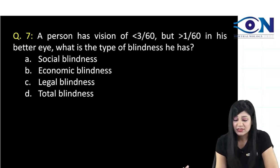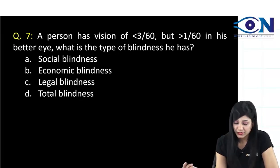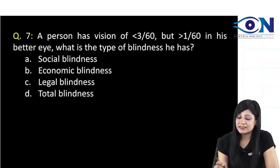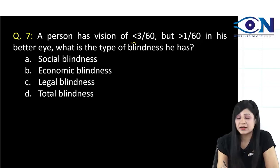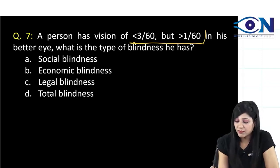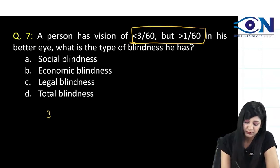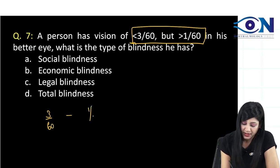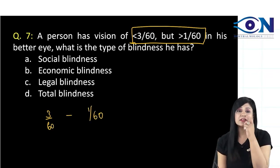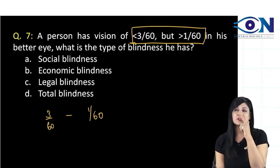Next question. The patient has a vision of less than 3 by 60, but it is more than 1 by 60 — so vision from 3 by 60 to 1 by 60. What is the type of blindness?